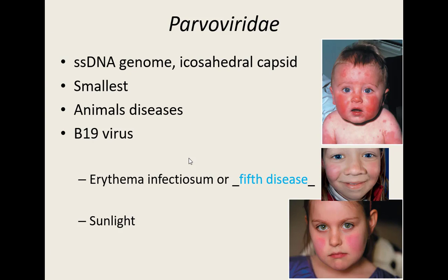It was also nicknamed the fifth disease because back in the 1950s, before WebMD and Google, doctors had lists of things that cause childhood rashes and this was number five on the list. It also has the nickname 'slapped cheek syndrome' because those cheeks turn super bright red. Children may have a slight fever, but it will go away on its own within about a week — there's no treatment needed. Sunlight can aggravate the redness. And with that, we've ended the DNA viruses.